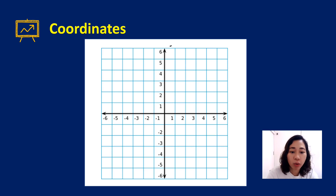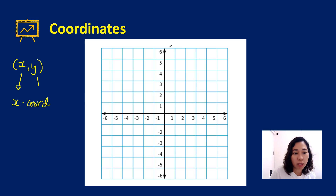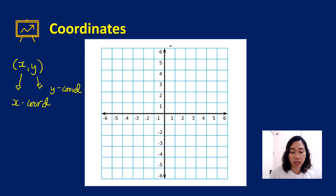Coordinates are ordered pairs. The first number that appears is your x-coordinate, and the second number that appears is your y-coordinate.